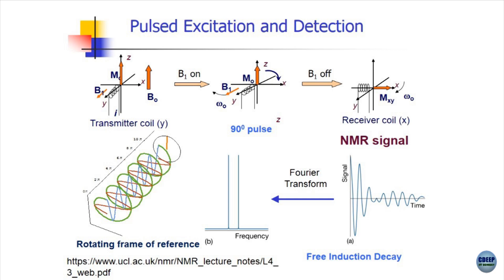The signal at the detector is still more complicated than a simple FID because the detector is not moving. If you could move the detector at the same frequency you would get the FID right away, but that would be too messy. So you get a slightly more complicated signal, but the software takes care of that. This is a very preliminary overview of how NMR spectra are actually recorded using a 90 degree pulse.